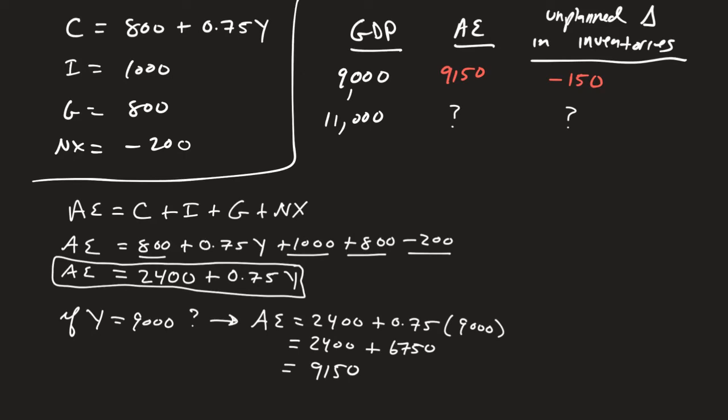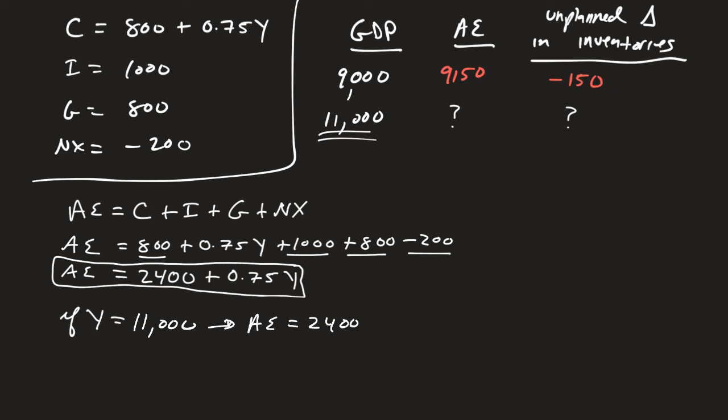Now let's take a look at when GDP is equal to that 11,000. So I'm just going to erase a little bit here. Let's erase this part. And what if we have GDP equaling to 11,000? Well, we do the same thing, we're just going to plug that in. So if GDP equals 11,000, we know that aggregate expenditure is going to equal 2,400 plus 0.75 times 11,000.